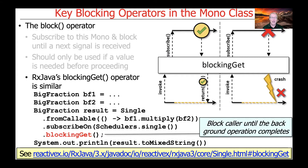RxJava has a blockingGet operator in its Single class that's very similar to this. You can see that it's called blockingGet instead of block, but it can be used in exactly the same way. You can have a Single fromCallable operation that will multiply two big fractions together in a background thread, and then call blockingGet to block the calling thread until the background operation completes.